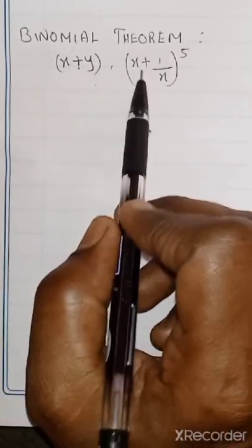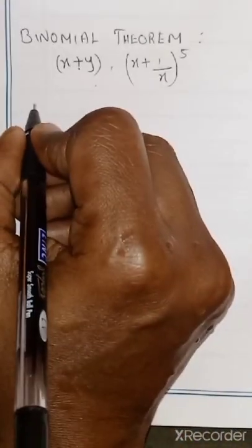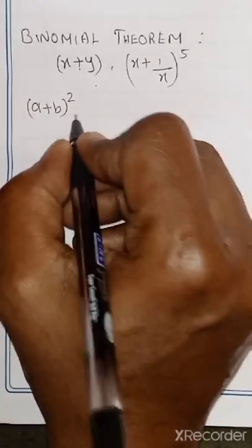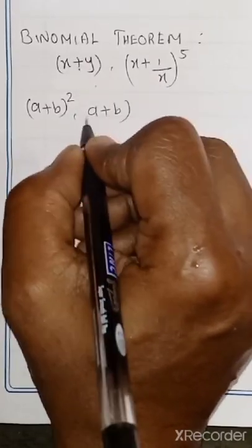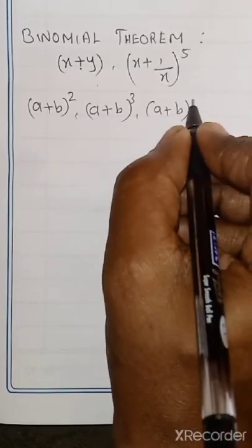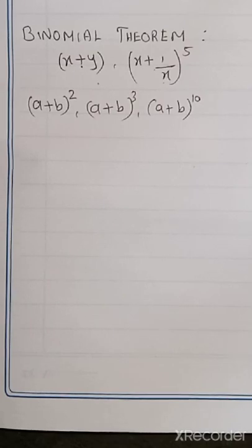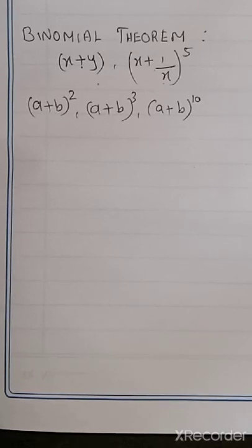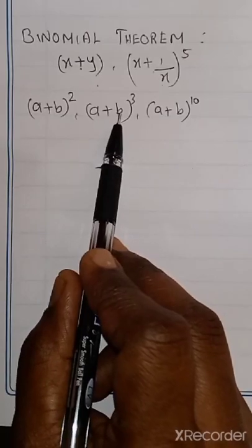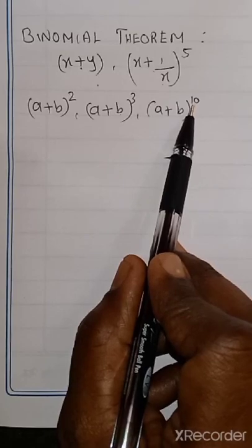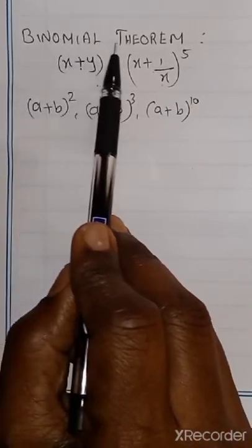Now what is this binomial theorem? Have you studied A plus B whole square formula? We know A plus B whole square formula and A plus B whole cube formula. But is it possible to find A plus B power 10? We don't have a direct formula for this. To evaluate a binomial expression when the power is more than 3, we can use the binomial theorem.